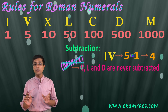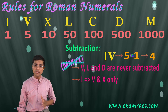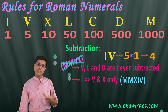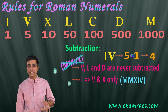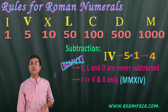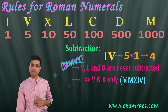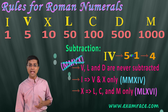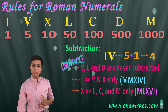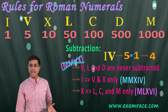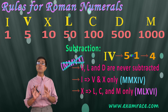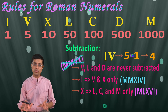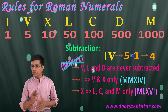The symbols V, L, and D are never subtracted. The numeral 1 is subtracted only from 5 and 10, because it only makes sense to subtract from those values. Similarly, the numeral 10 (X) is subtracted only from L, C, and M. These are the commonly taught rules of Roman numerals.